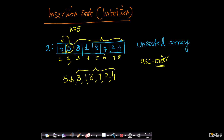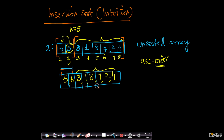So my second element is taken care of. This is my first iteration. The moment I have finished this, I have two sub-arrays: a sub-array that I have already processed, and a sub-array that I have not touched. This sub-array already looks sorted — 5 and 6 are in sorted order. The rest of the array, which I have not yet touched, is not yet in sorted order.